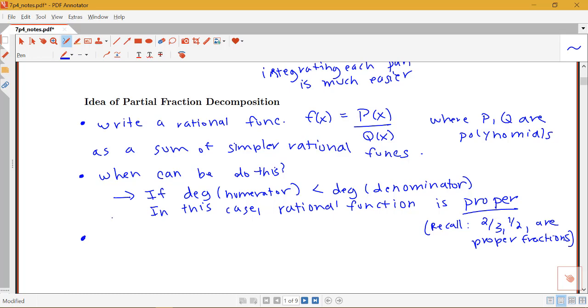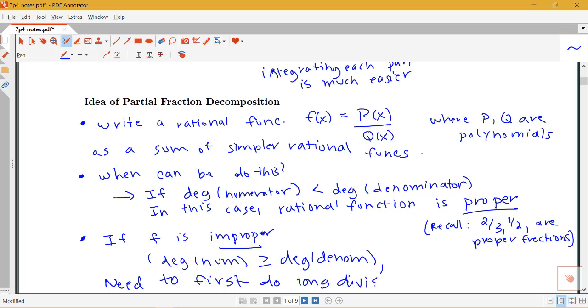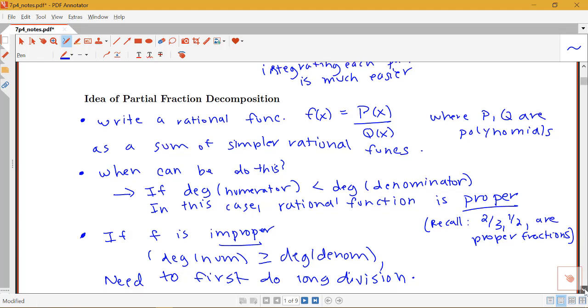So what are we going to do if we're not in this situation? If f is improper, the function that we're given, meaning the degree of the numerator is greater than or equal to the degree of the denominator, we'll need to first do long division.